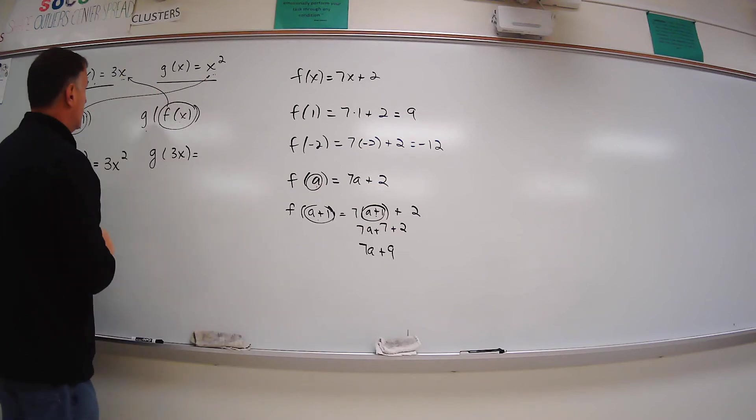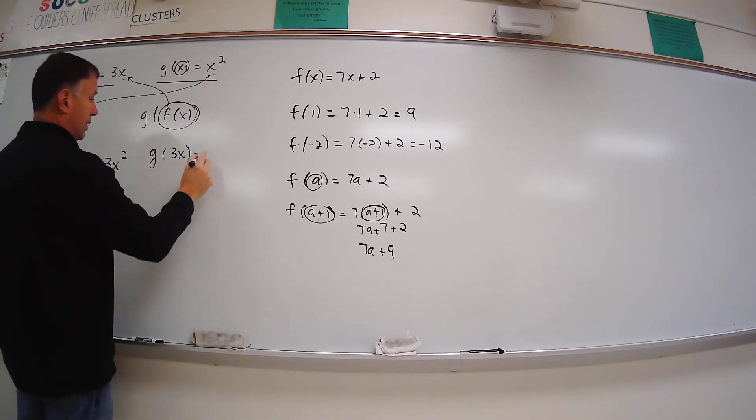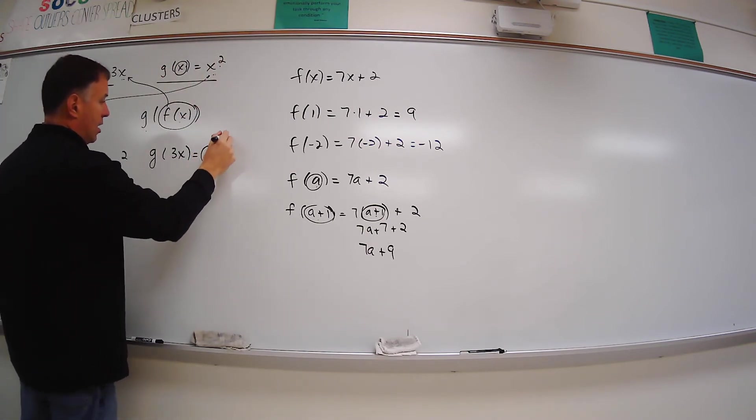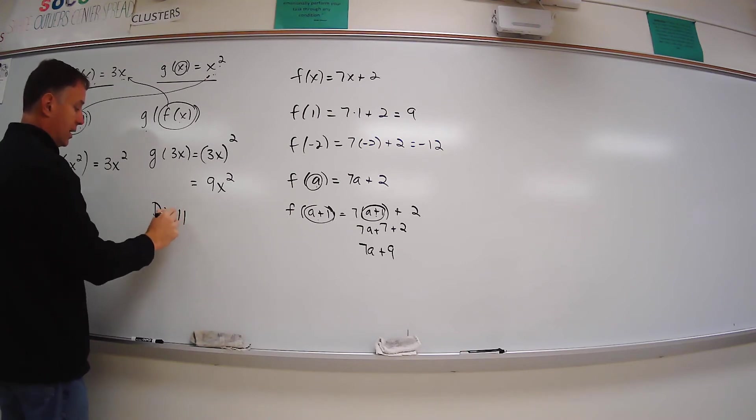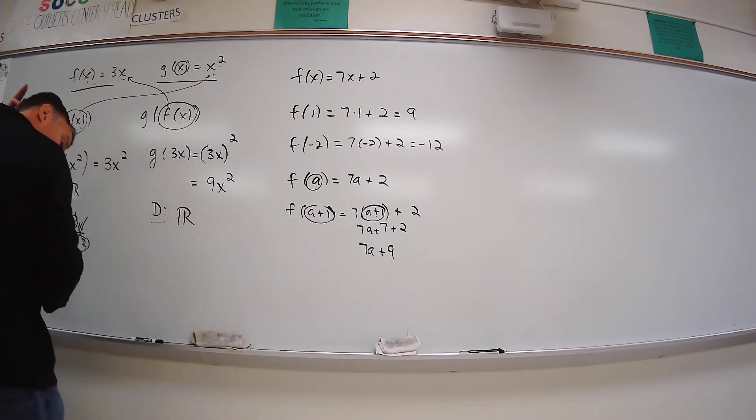So my g function says that whatever is in parentheses, I square it. So this is going to be 3x all squared. So 3x times 3x is 9x squared. And again, my domain is going to be all real numbers.